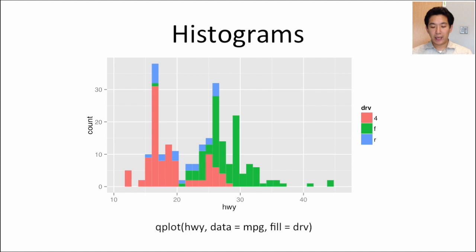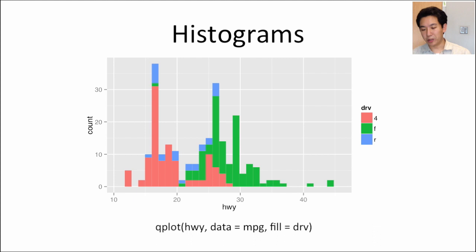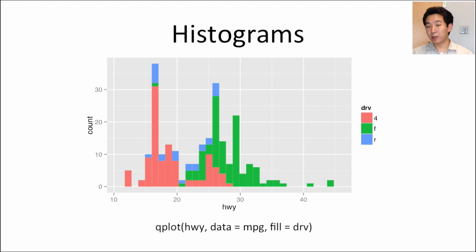You can make a histogram with the qplot function by only specifying a single variable — here just the highway variable — showing the highway mileage for all cars in the dataset. To separate which cars are four-wheel, front-wheel, or rear-wheel drive, I specify the fill argument instead of the color argument, so the histogram bars are filled with different colors based on the drive type. You can see a similar story: four-wheel drive vehicles tend to have the lowest mileage, and front-wheel drive tends to have the highest.